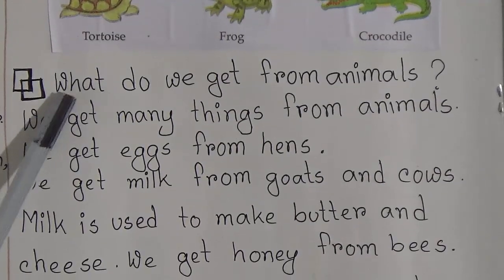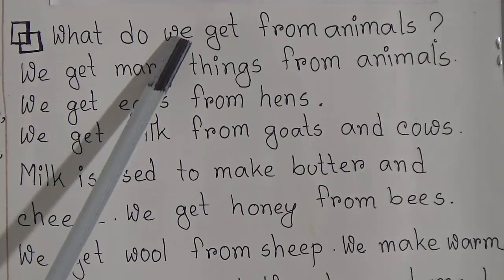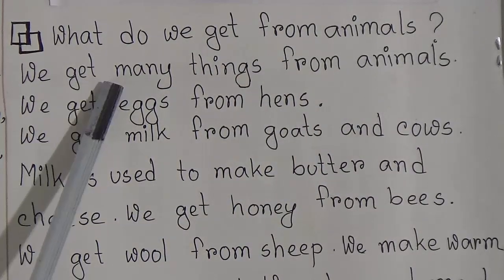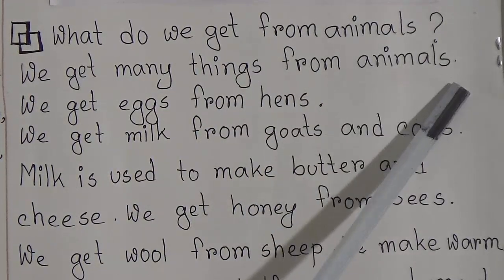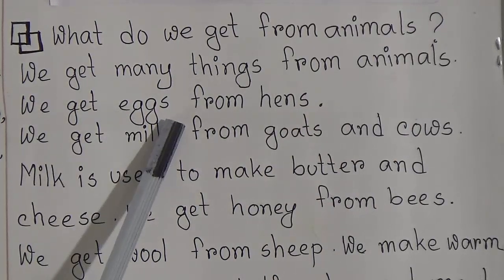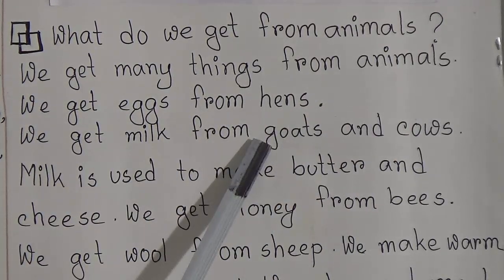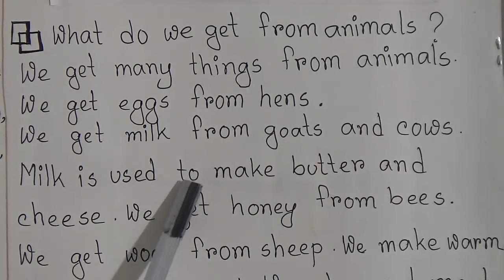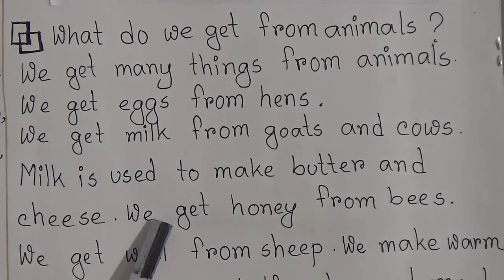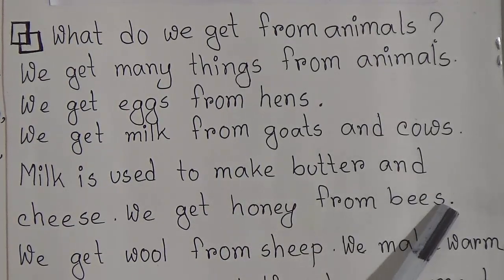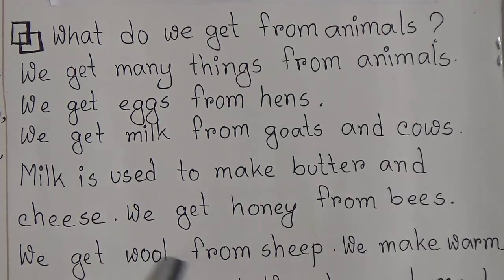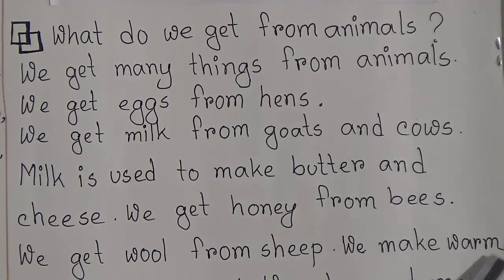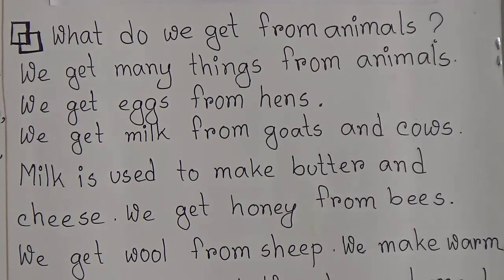Now our last topic: what do we get from animals? We get many things from animals. We get eggs from hens. We get milk from goats and cows; milk is used to make butter and cheese. We get honey from bees. We get wool from sheep, and we make warm cloth from wool. We also get meat from many animals.